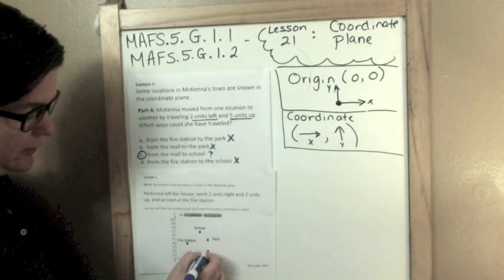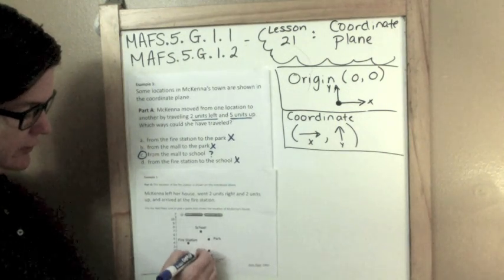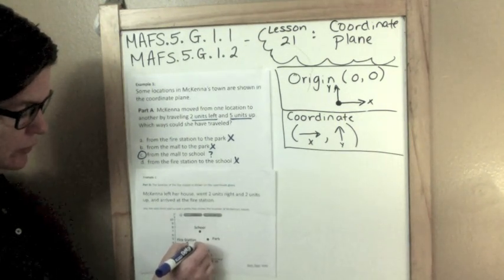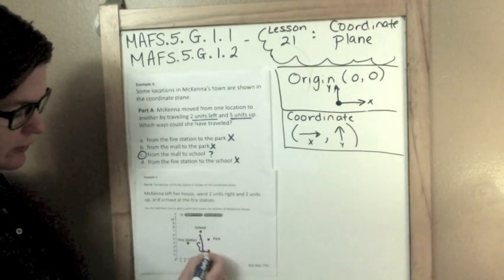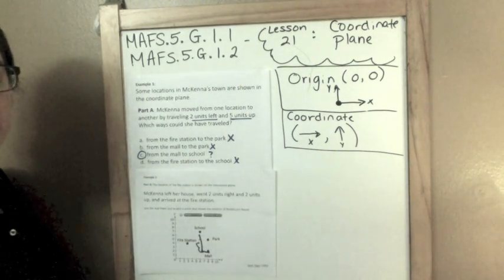So the answer is C. Going two units, one, two left, and one, two, three, four, five up would get us from the mall to the school.